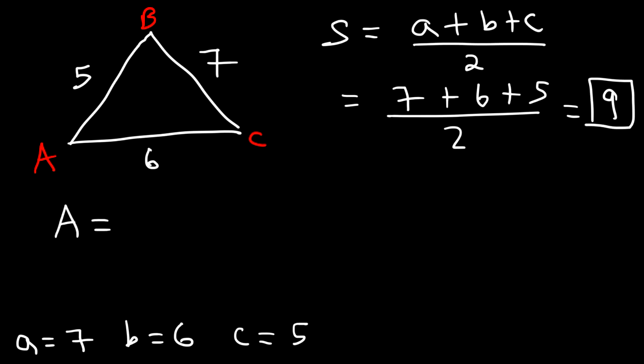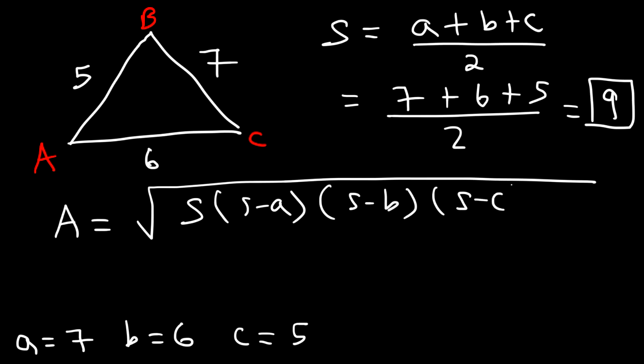Now the area is going to be the square root of S times S minus A times S minus B times S minus C. So S is 9, and then we're going to have 9 minus A, which is 7, so 9 minus 7, and then 9 minus 6, and 9 minus 5.